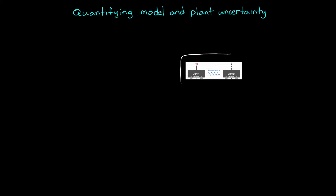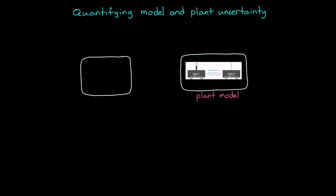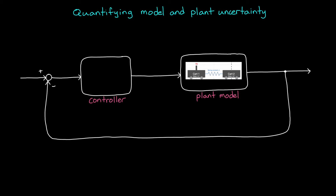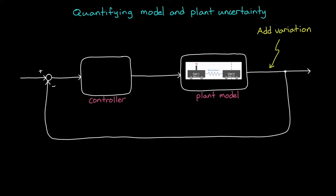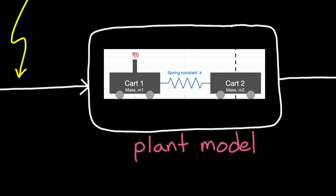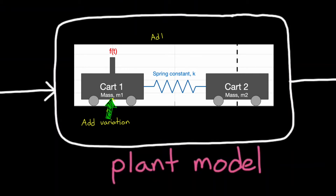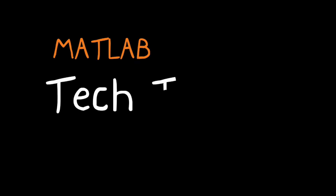In the last two videos, we showed a few different ways to quantify how robust a system is to model and plant uncertainty by looking at how much input and output variation it can handle before it no longer meets requirements. We looked at how varying the input and output affected stability, and then both simultaneously. In this video, rather than apply variation to the model as a whole, we're going to apply it to the individual parameters within the model to determine how robust the system is to parameter uncertainty. I'm Brian, and welcome to a MATLAB Tech Talk.